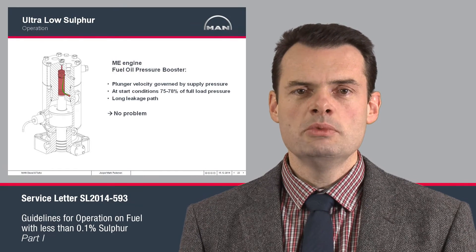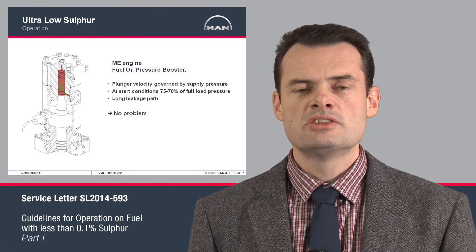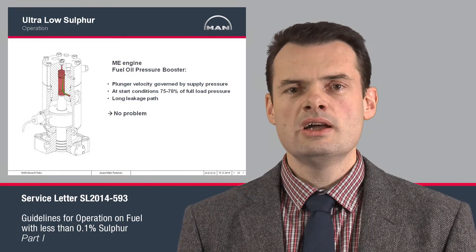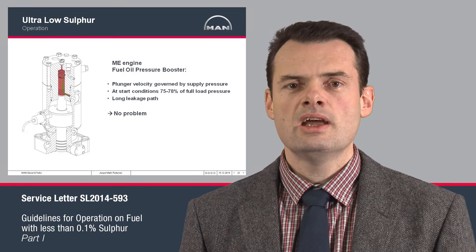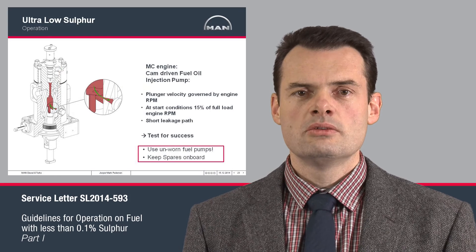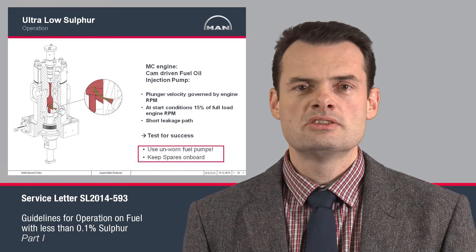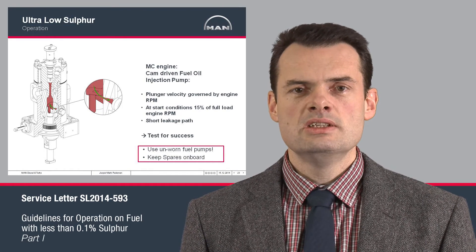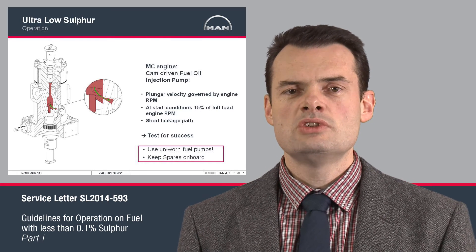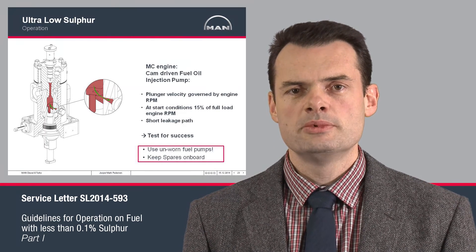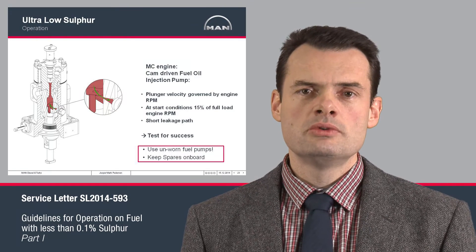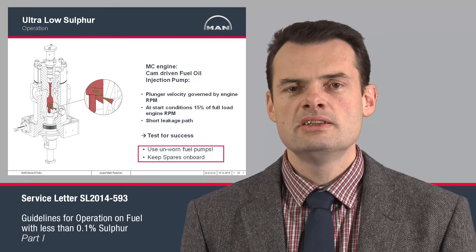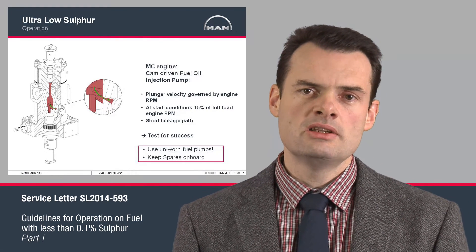In ME engines, the stroke of the plunger inside is not constant — it is varied with engine load — resulting in a very high distance between the low-pressure drain side and the high-pressure injection side. In the MC engine design, a constant stroke fuel pump is used and the angle of the helix cut is changed to vary the active filling of the fuel pump. This results in a very low distance between the high-pressure side and the drain side, meaning internal leakage inside MC engine fuel pumps is much greater than for ME engines.